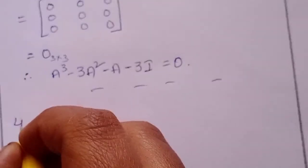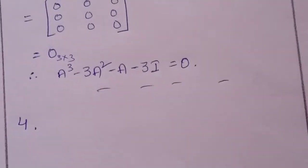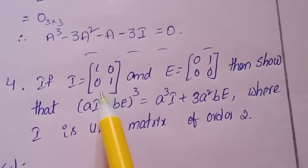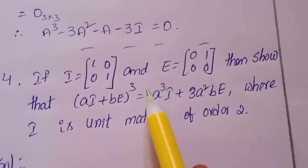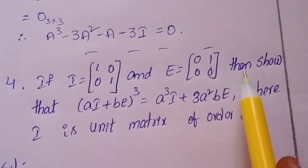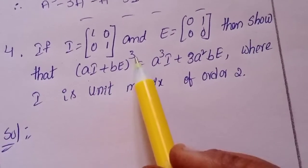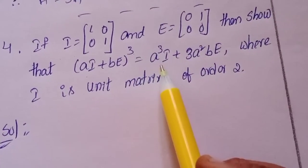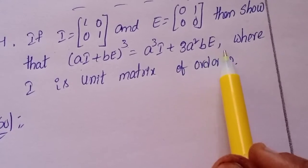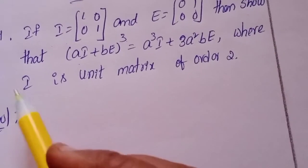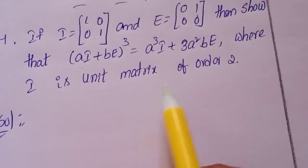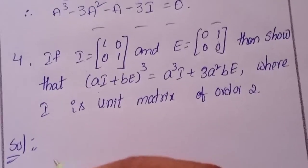Fourth question. If I equals [1,0 / 0,1] and E equals [0,1 / 0,0], then show that (aI + bE)^3 equals a^3*I plus 3a^2*b times E, where I is the unit matrix of order 2.